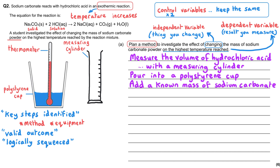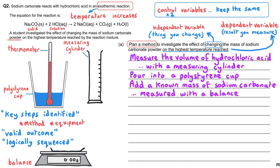Then you would add a known mass of sodium carbonate to the polystyrene cup, having measured this known mass with a balance. When referring to solids, we should always say we are measuring the mass; when measuring a liquid, we should always say we are measuring the volume.